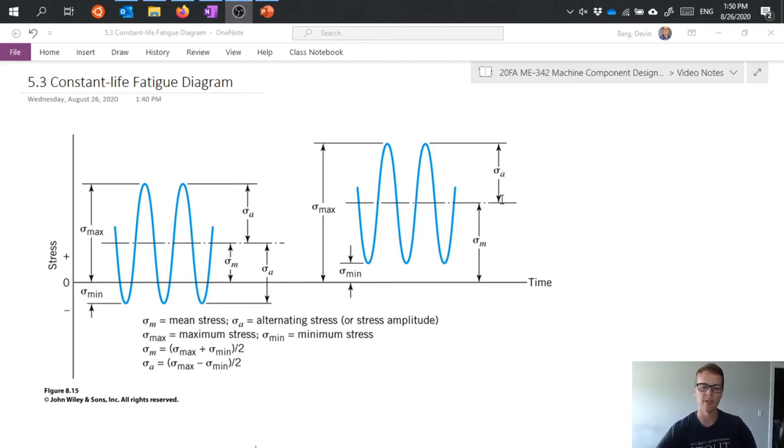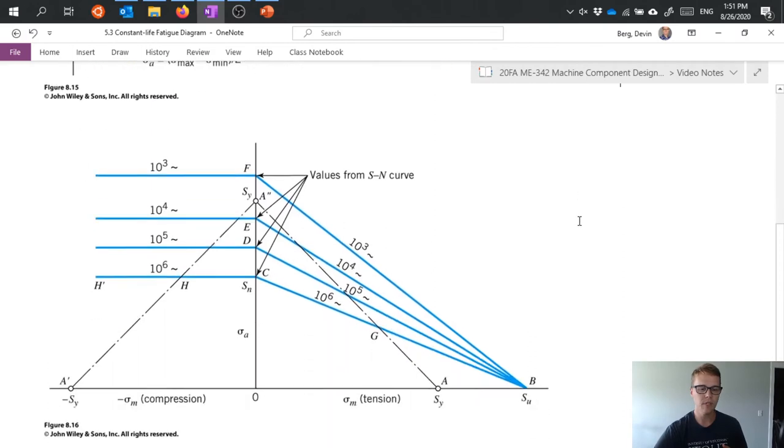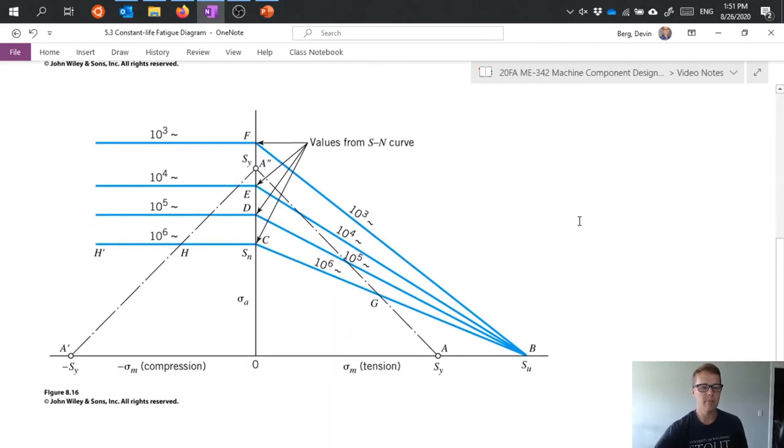So those two things kind of have to work together to help us understand what's going on. Once we know our mean and alternating stress for a situation, then we can employ this constant life fatigue diagram. So this is an example of what that constant life fatigue diagram might look like. Basically all we do is we're pulling information from our S-N curve, such as that 10^3 cycle limit that I talked about and our endurance limit which we usually say is 10^6.